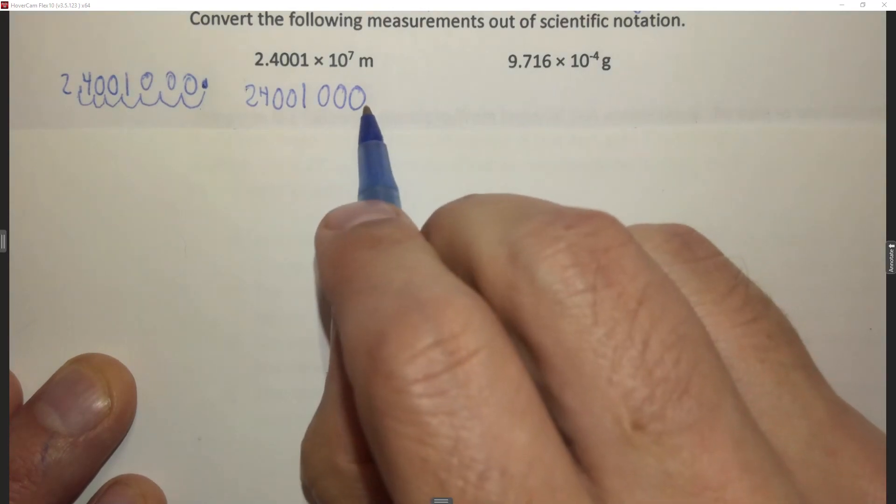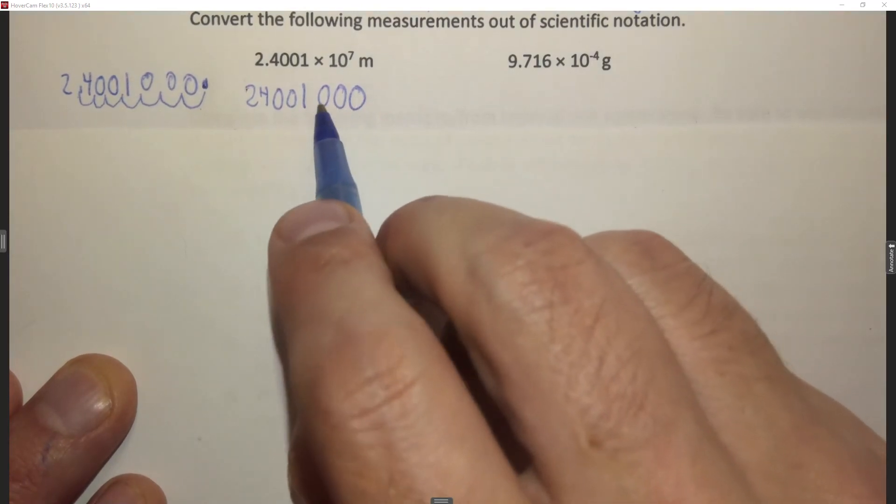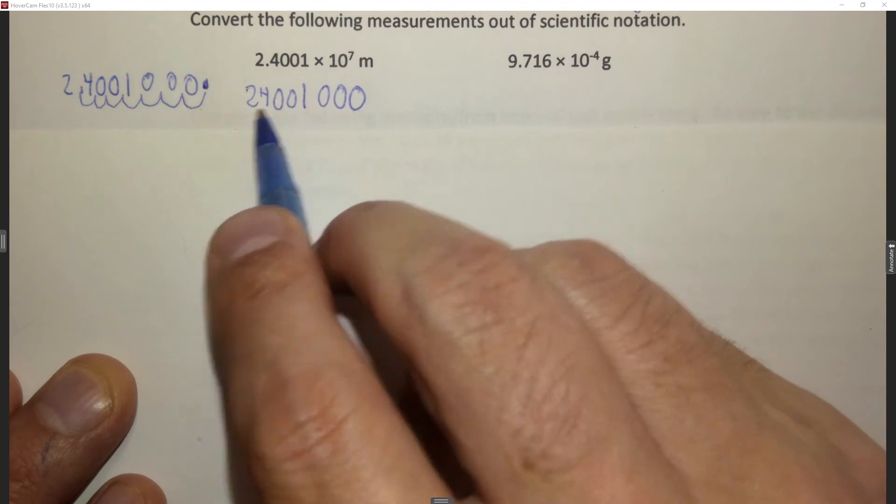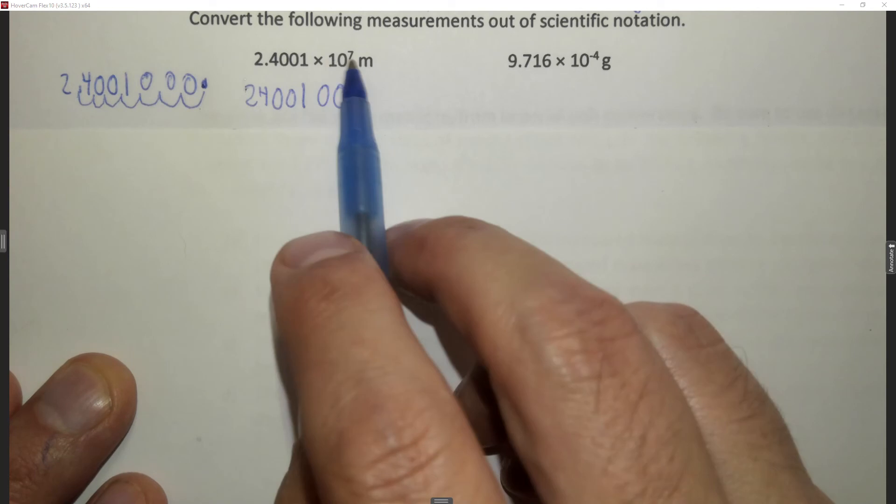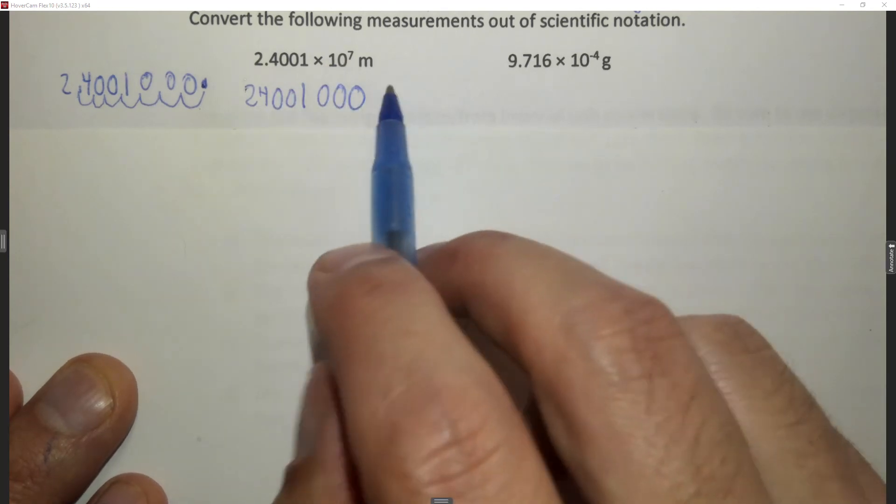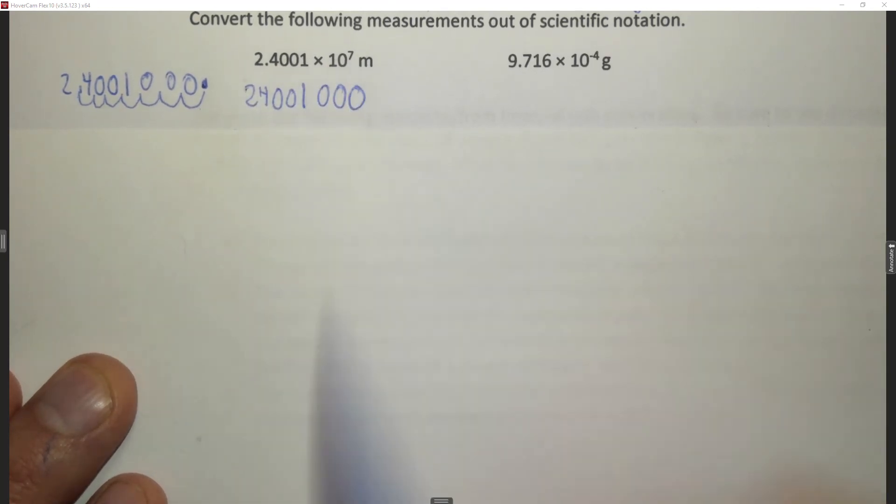Okay now the decimal place is here and if you want to you can just count it back 1, 2, 3, 4, 5, 6, 7. You can just double check that you did it properly. So if you move it seven spaces this way and you're converting into scientific notation this would be your number times 10 to the 7.